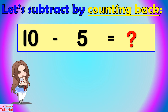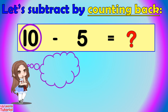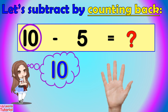Let's subtract 10 minus 5. First, put the minuend or the bigger number in your head — that is 10. Then count back from 10: 10, 9, 8, 7, 6, 5. The answer is 5.